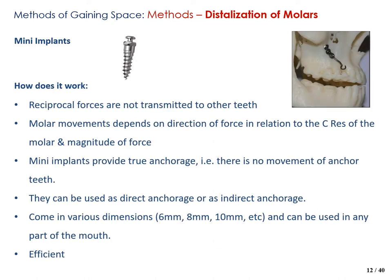Another method of distalization is using mini implants. This is more efficient and faster because the reciprocal forces are not transmitted to other teeth — they are concentrated at the particular tooth or teeth being distalized. Mini implants provide true anchorage with no movement of anchor teeth, unlike conventional anchorage. They can be indirect or direct anchorage, come in dimensions from 6 to 10 millimeters, and can be used in any part of the mouth. Molar movement depends on the direction of force in relation to the center of resistance and the magnitude of force.